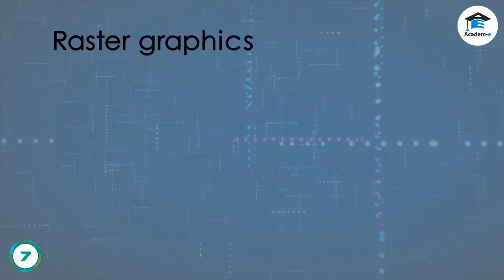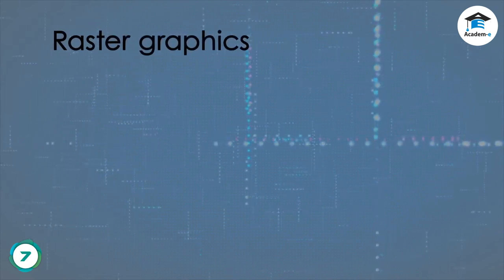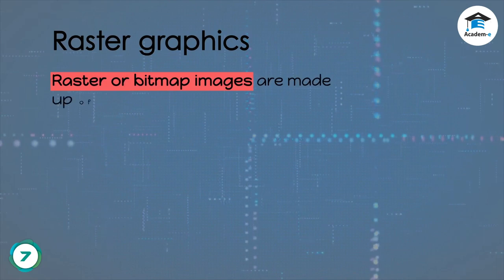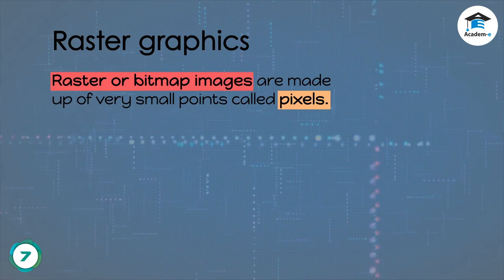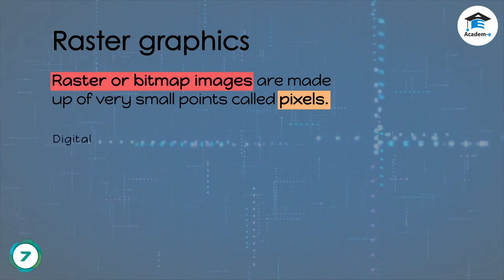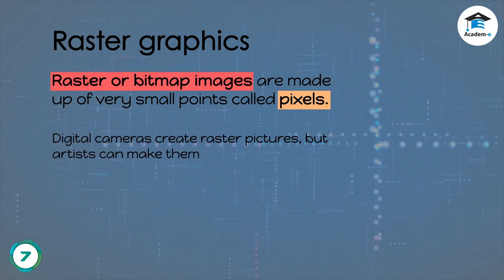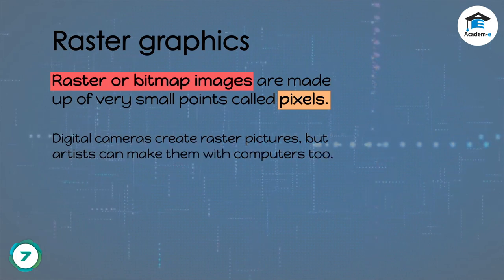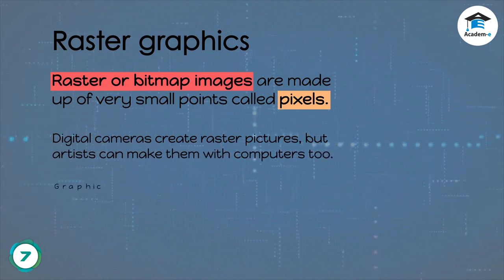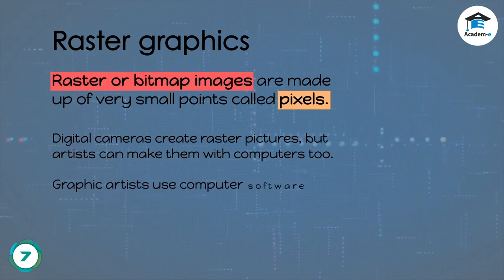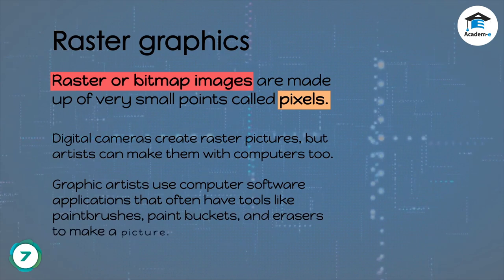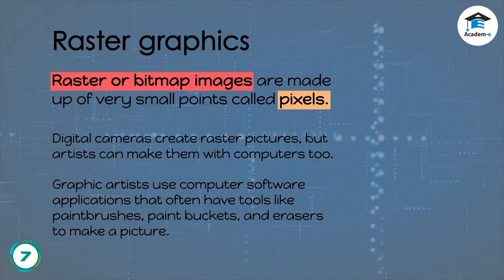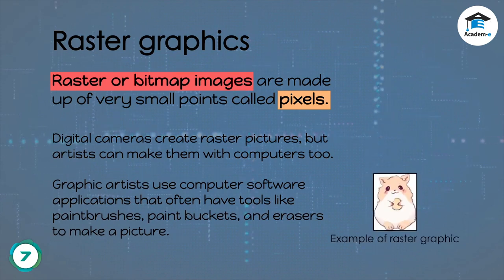Raster graphics: Raster or bitmap images are made up of very small points called pixels. Digital cameras create raster pictures, but artists can make them with computers too. Graphic artists use computer software applications that often have tools like paint brushes, paint buckets, and erasers to make a picture. Example of raster graphics.